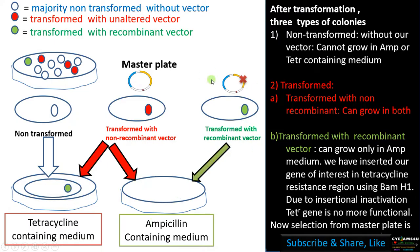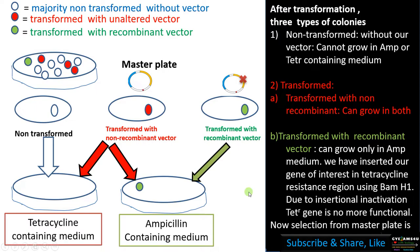Colonies transformed with recombinant vector cannot grow on tetracycline medium, as the gene of interest is inserted within the tetracycline gene sequence making it non-functional, whereas they can grow in ampicillin containing medium. By comparing positions with the master plate using replica plating, we can identify colonies that grow in ampicillin but not in tetracycline — those are the ones containing our gene of interest. This is how antibiotic resistance genes are used for selection of transformed recombinant colonies.